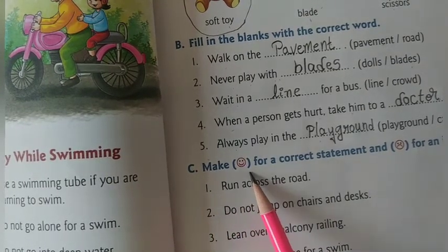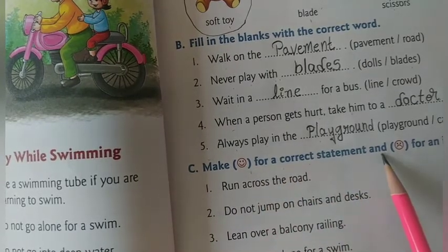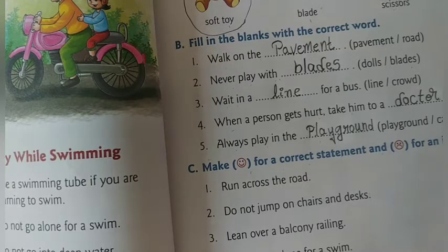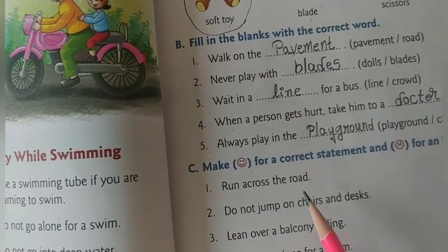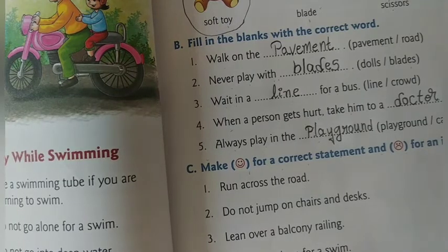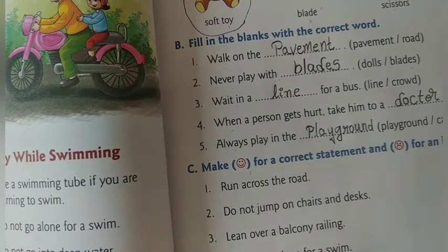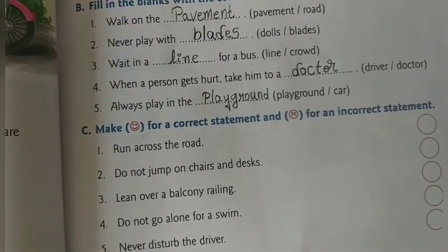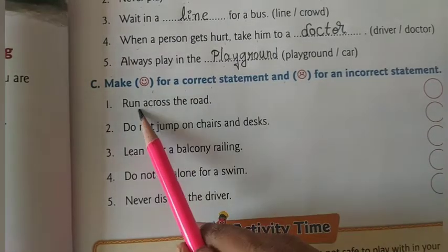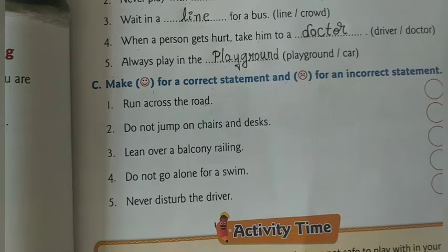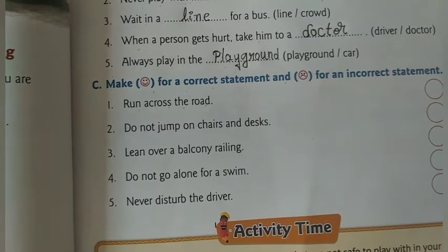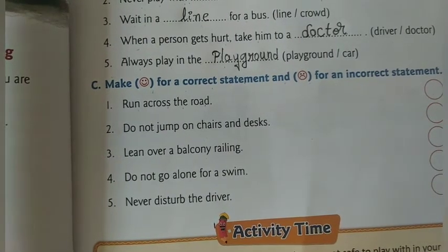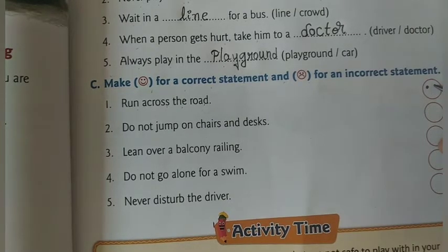Option C: make a happy face for a correct statement and a sad face for an incorrect statement. First statement: run across the road. This is an incorrect statement, so we draw a sad face.